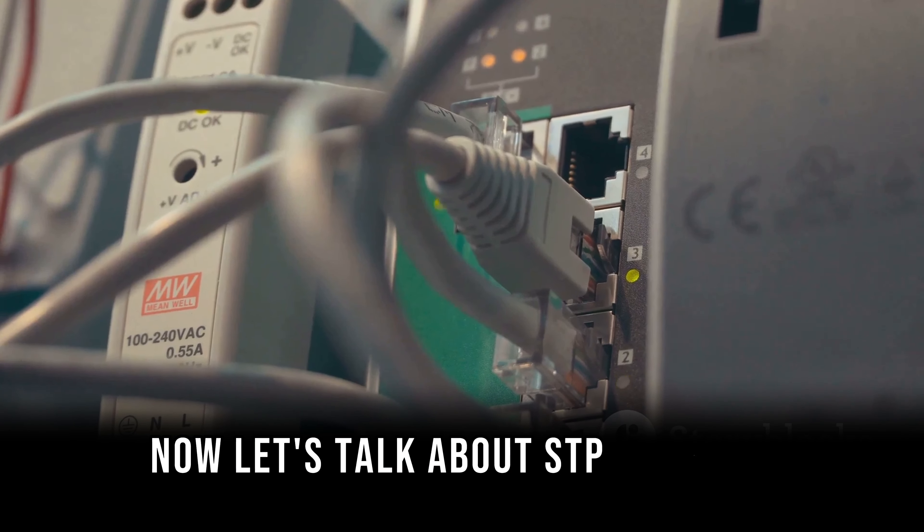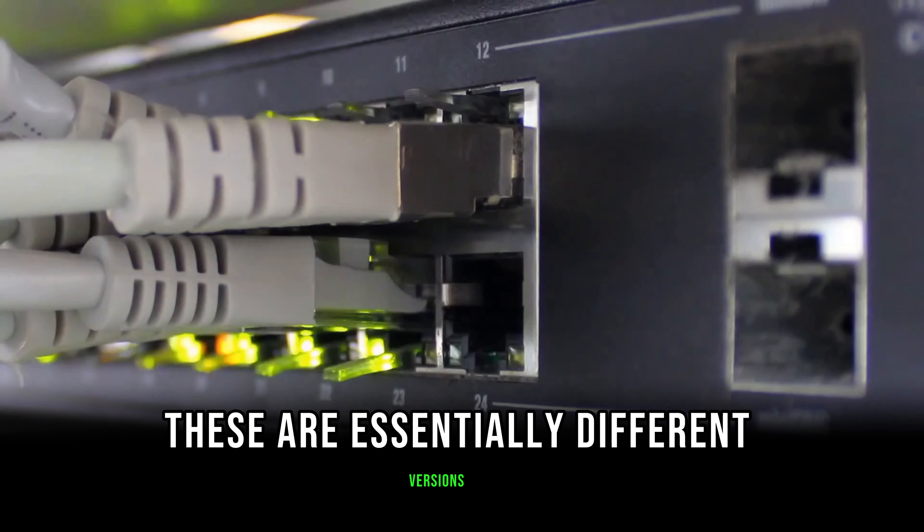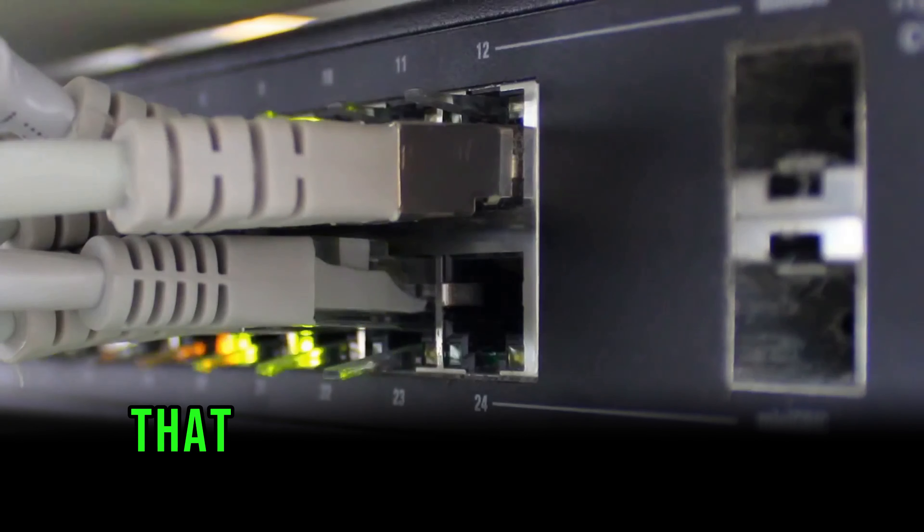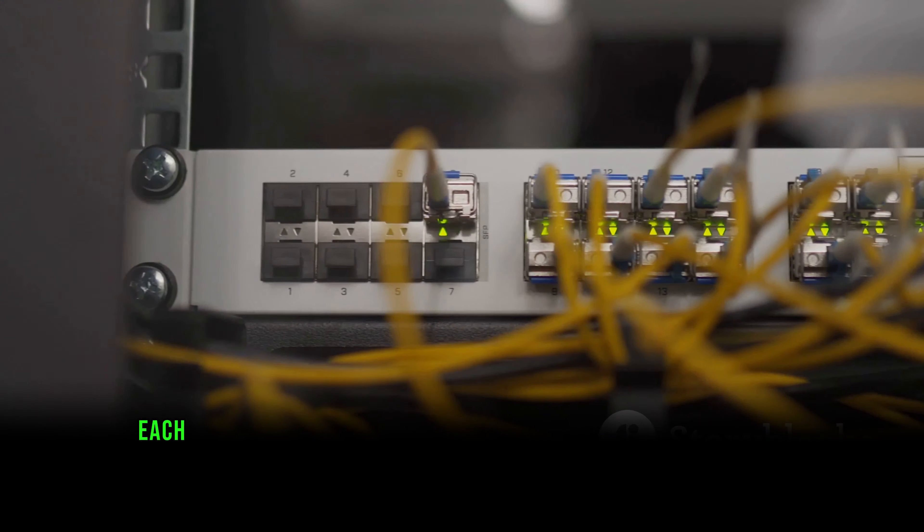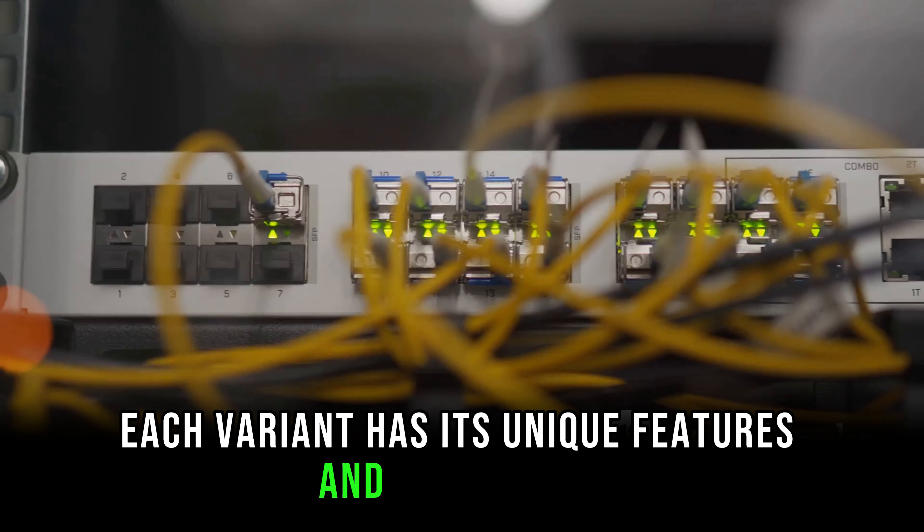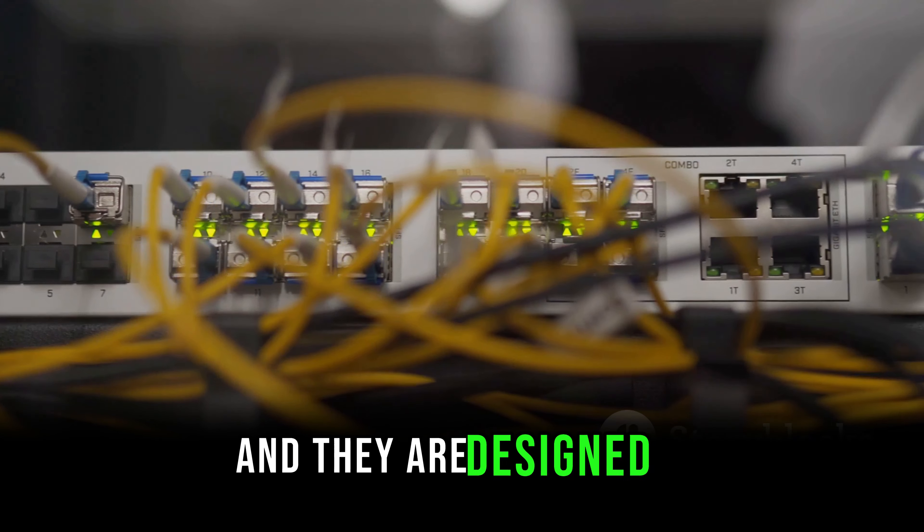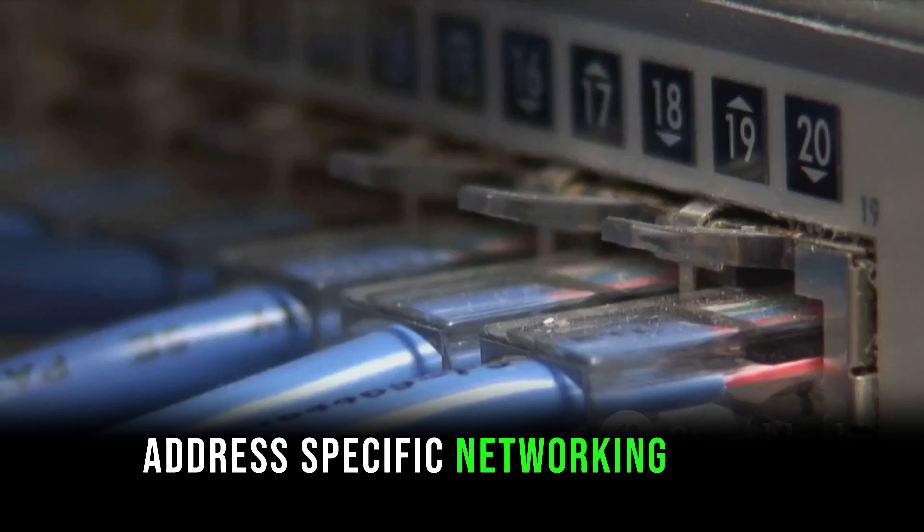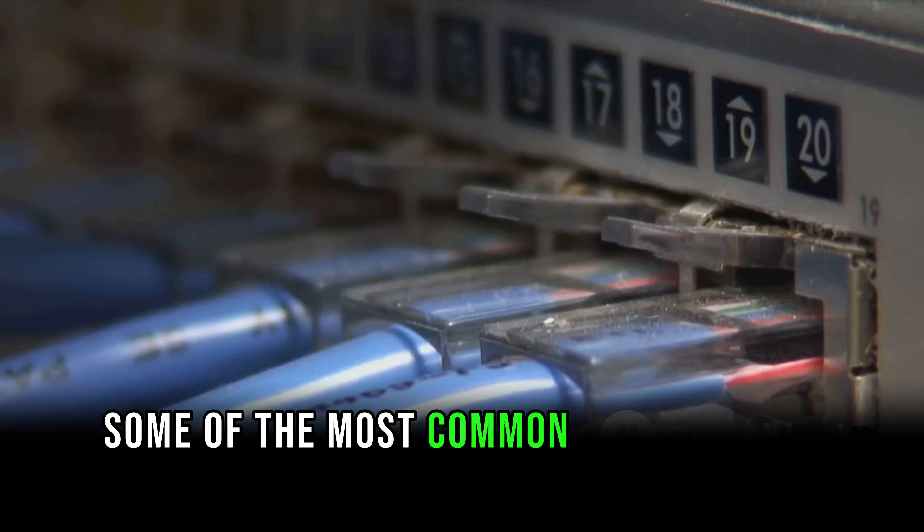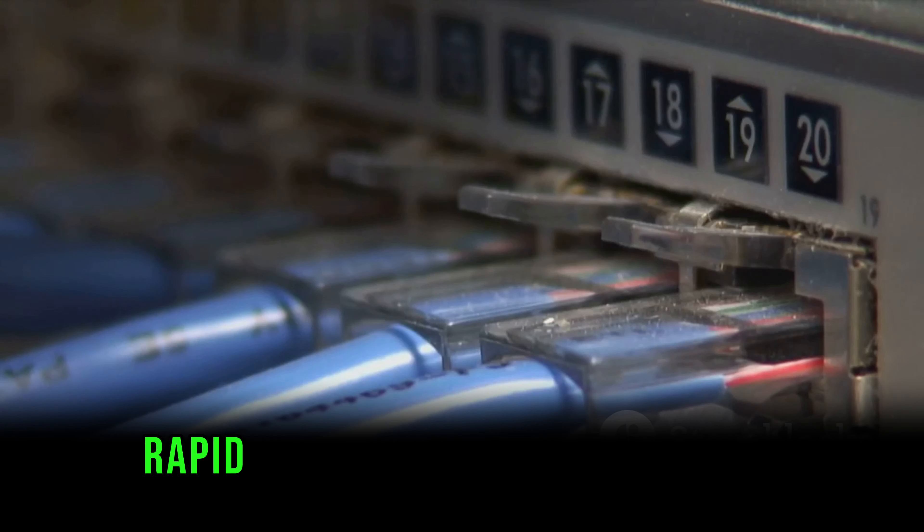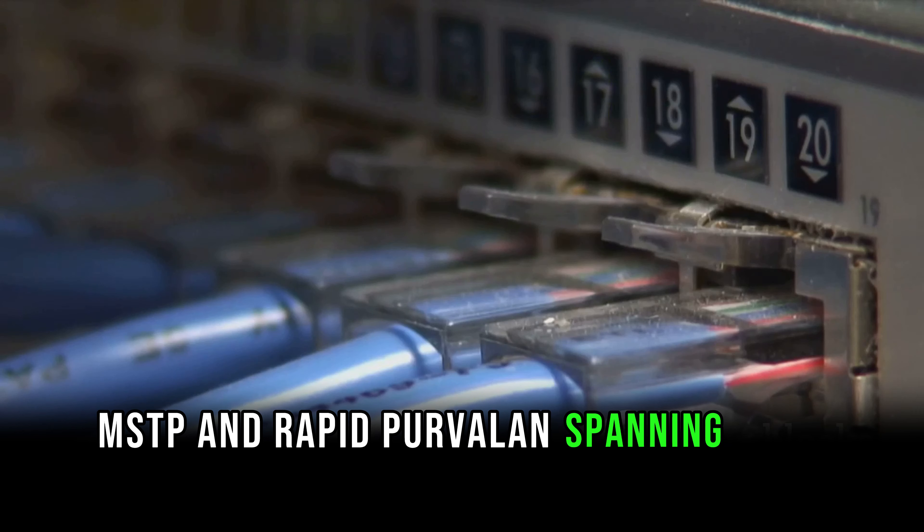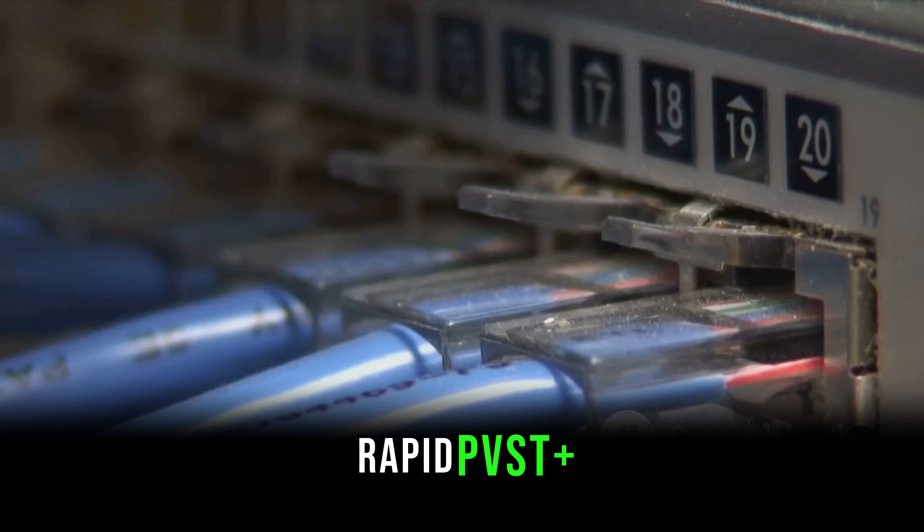Now let's talk about STP variants. These are essentially different versions of the Spanning Tree Protocol that have been developed over the years. Each variant has its unique features and advantages, and they are designed to address specific networking needs. Some of the most common STP variants include Rapid Spanning Tree Protocol (RSTP), Multiple Spanning Tree Protocol (MSTP), and Rapid Per-VLAN Spanning Tree Plus (Rapid PVST Plus).